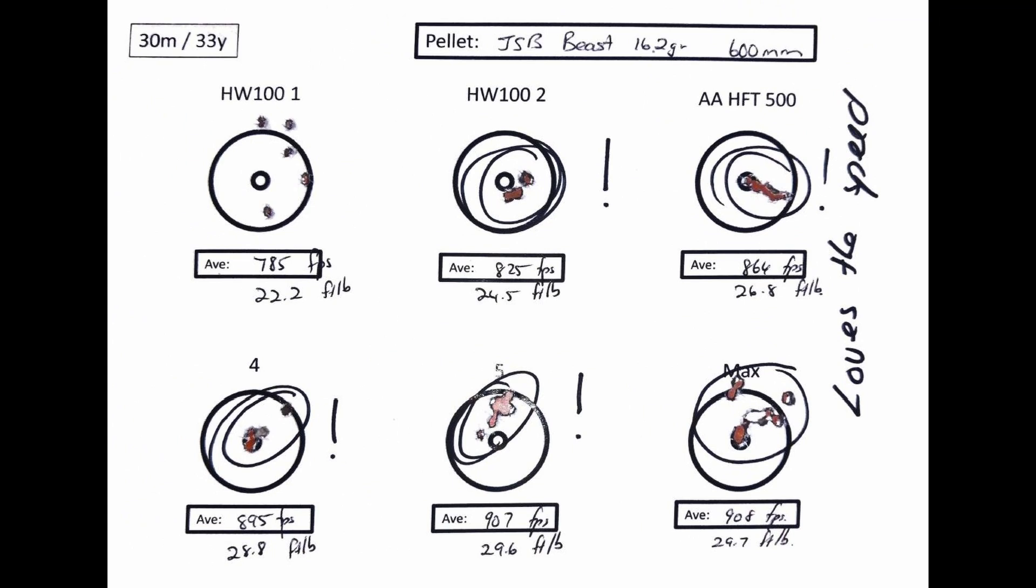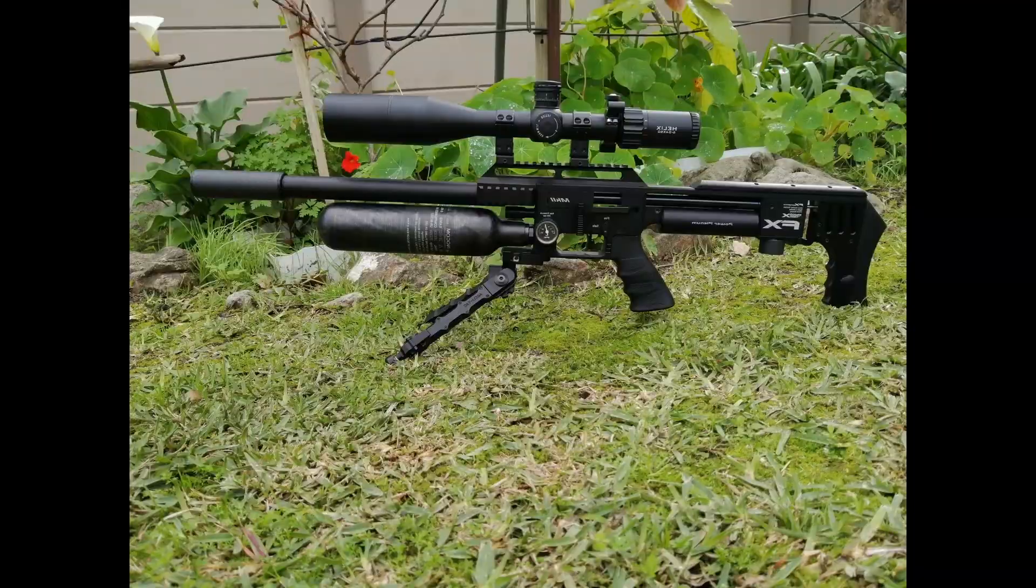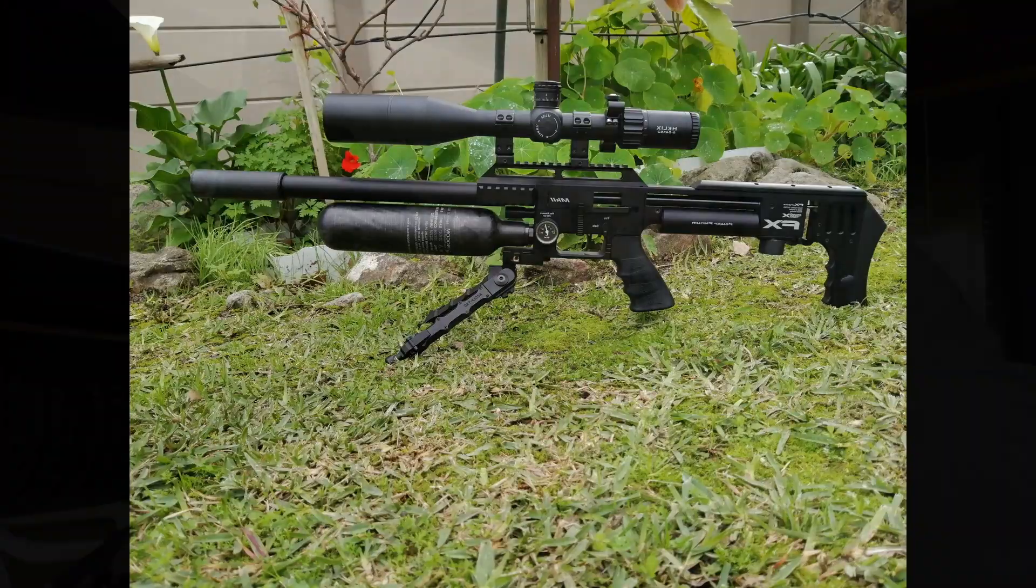But now it's time to do a swap and go back to the 500 millimeter barrel. So I zeroed the gun in between barrel changes, so it should be spot-on from the word go. Only one way to find out, and that's to shoot it.